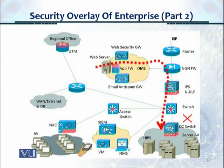Previously we saw a flow in which traffic from the outside exterior network was blocked by the NGN firewall. In this particular case, the web server or any other server in the DMZ is directing traffic to an internal server and is not authorized to do that, and hence it is blocked by the firewall at the data center switch.